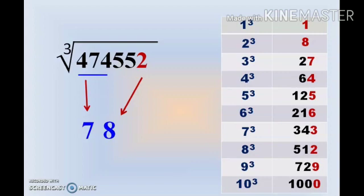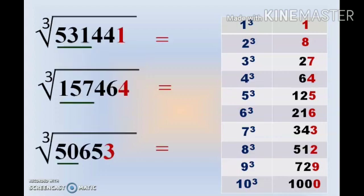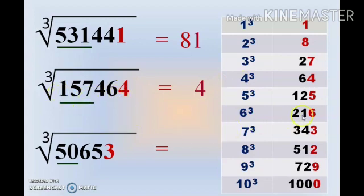Next, I have written 3 problems on the slide. Do them along with me so you can see how easy and quick this method is. The first number ends with 1, so the cubic root ends with 1. Skipping 3 digits leaves 531, which falls between 512 and 729 — the corresponding cubic root is 8, giving 81. The second number ends with 4, so the cubic root ends with 4. Skipping 3 digits leaves 157, which falls between 125 and 216 — corresponding cubic root is 5, giving 54. The third number ends with 3, so the cubic root ends with 7. Skipping 3 digits leaves 50, which falls between 27 and 64 — corresponding cubic root is 3, giving 37.